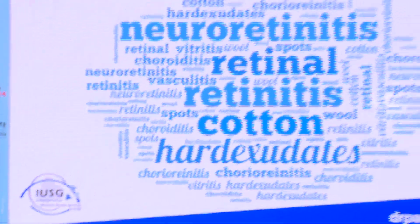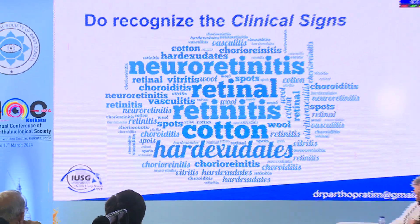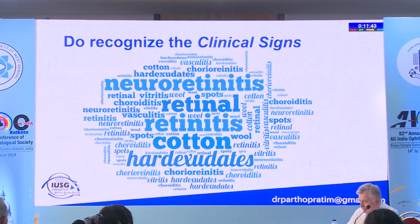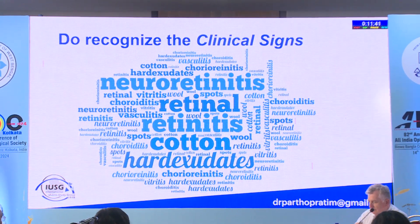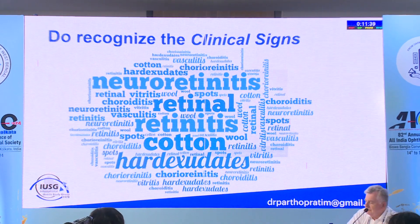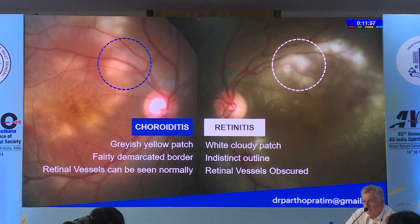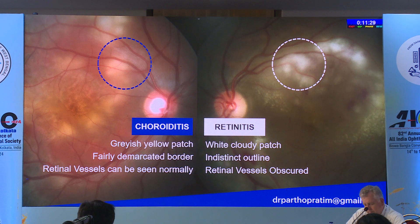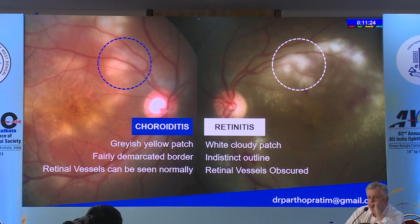When you are dealing with a case, first you have to understand that you need to recognize the clinical signs. It can present with retinitis, but being an ophthalmologist you must know that retinitis is not the only presentation. For those not very familiar, a tip to differentiate: in retinitis the retinal vessels are obscured, whereas in choroiditis the vessels appear normal.